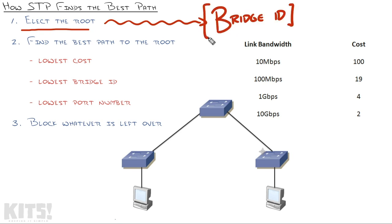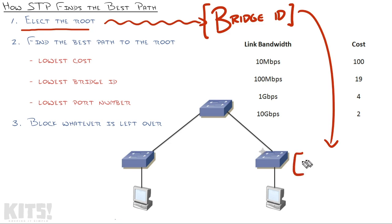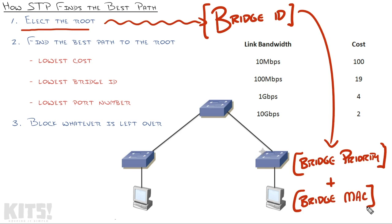The way it elects the root bridge is by picking the switch with the lowest Bridge ID. What's the Bridge ID? The Bridge ID is the combination of two things: the Bridge Priority added to the Bridge MAC address. What is the Bridge Priority and the Bridge MAC address? Good question — now we're getting to something real.